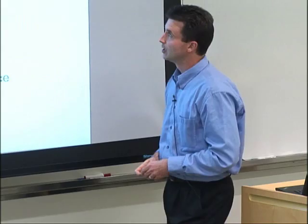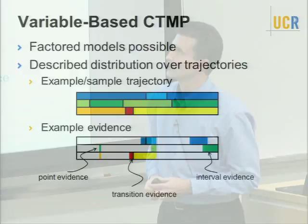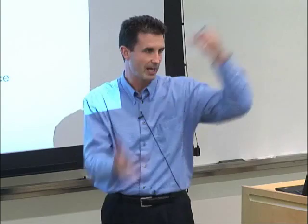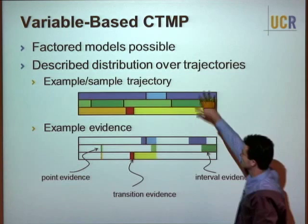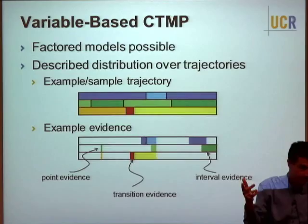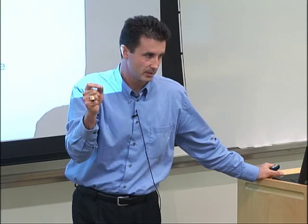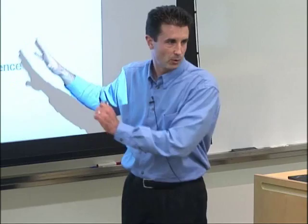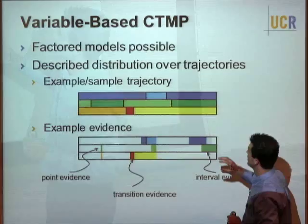What we want to do is build models described in terms of variables, not a flat state space. I'm going to talk about continuous time Bayesian networks (CTBNs), the factored model we developed. There are others from the verification literature — Petri nets and similar — but those tend to focus on steady-state distribution properties rather than learnability and estimation from data.